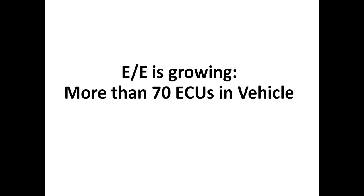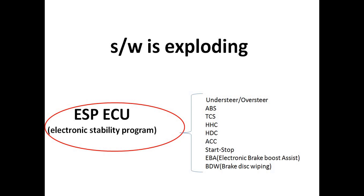Yes, I did mention E/E complexity is growing, there are more than 70 ECUs in a modern vehicle. The software is exploding. You can have a look at this example. This is the Electronic Stability Program ECU. It all started with just understeer and oversteer control. It also has got ABS, it also has got traction control, hill hold control, hill descent control, adaptive cruise control, start-stop, electronic brake boost assist, brake disc wiping. There are n number of functionalities being added in the same ECU. The only functionality it had was understeer and oversteer control. But apart from that, there are n number of functionalities within the same ECU. The software is exploding within the ECU.